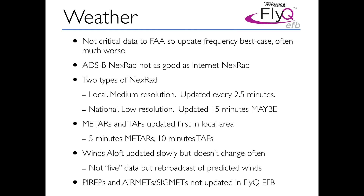One thing to understand about weather is that it's not considered critical information by the FAA. So if there's a problem with an ADS-B weather transmission, the FAA will fix it but won't jump on it immediately — it's not the same priority as traffic. This also means that the update frequencies for all weather products are pretty much best-case scenario; from personal experience, updates are quite a bit less frequent than listed.